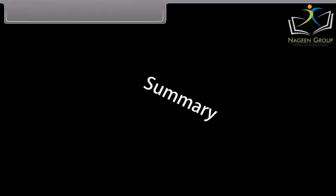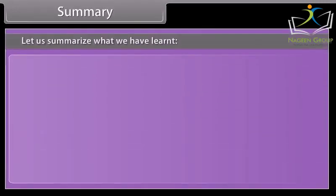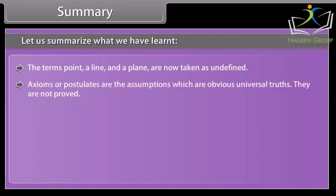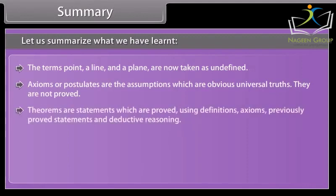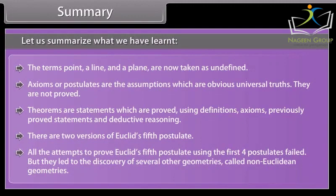Summary. Let us summarize what we have learned. The terms point, a line, and a plane are now taken as undefined. Axioms or postulates are the assumptions which are obvious universal truths. They are not proved. Theorems are statements which are proved using definitions, axioms, previously proved statements, and deductive reasoning. There are two versions of Euclid's fifth postulate. All the attempts to prove Euclid's fifth postulate using the first four postulates failed, but they led to the discovery of several other geometries called non-Euclidean geometry.